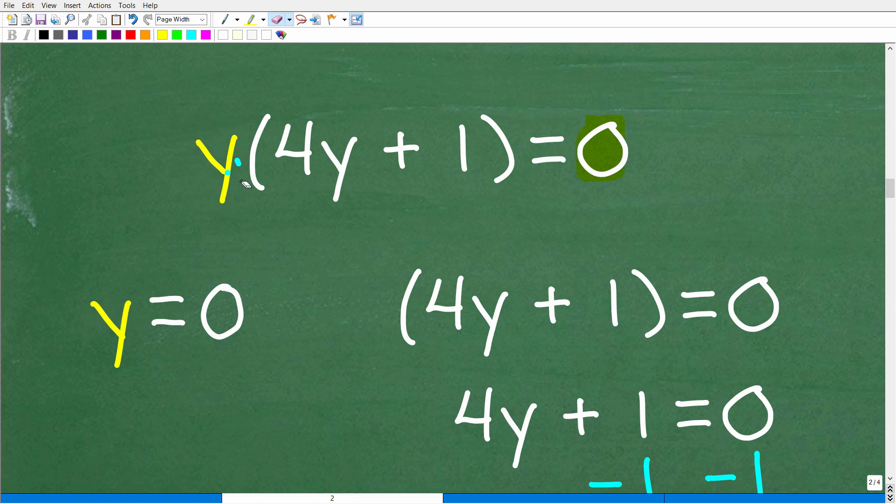So when you have a quadratic equation or any kind of polynomial equation where you can factor and set those factors equal to 0, well, we can use this property, right? So in other words, this must be equal to 0 or this must be equal to 0 as well.